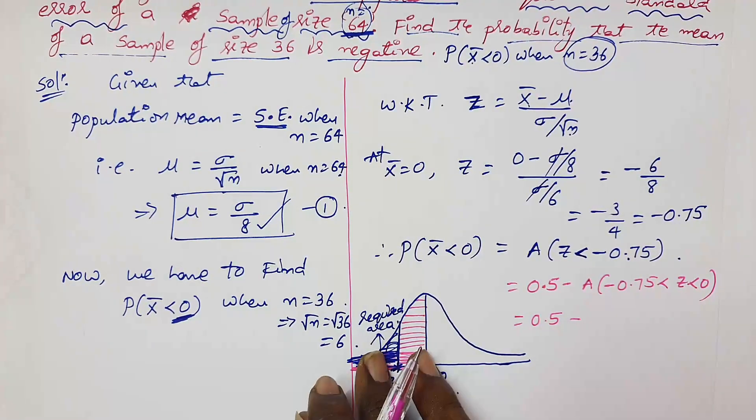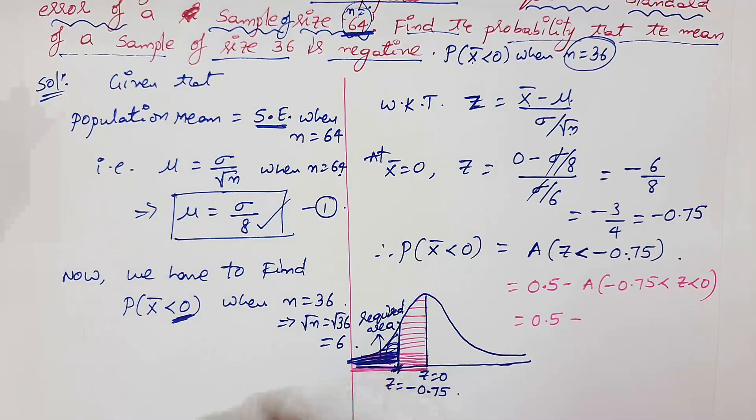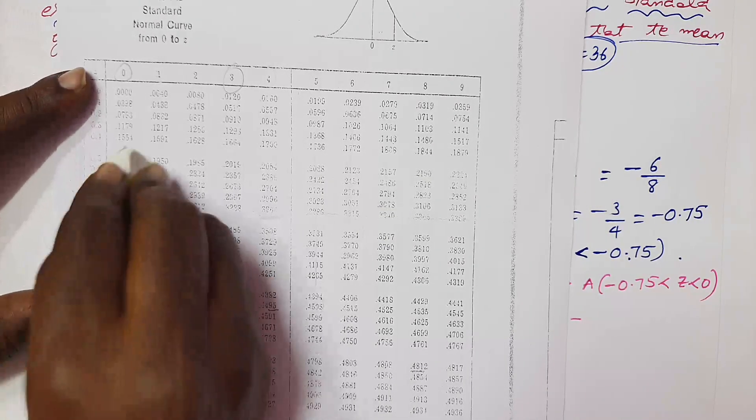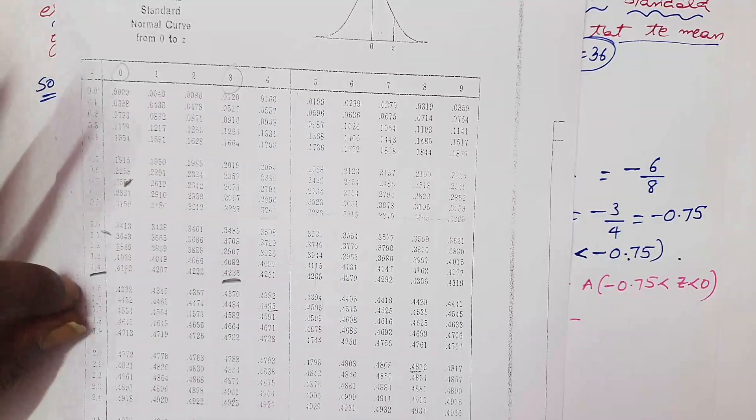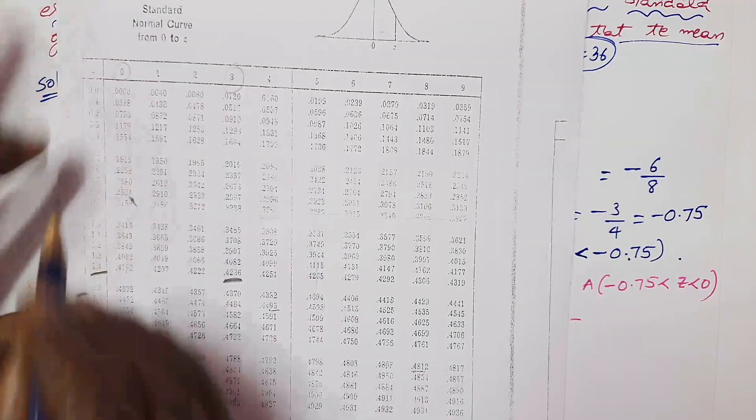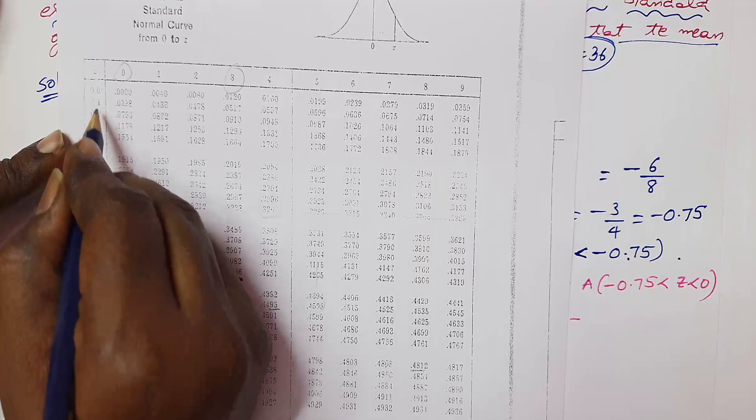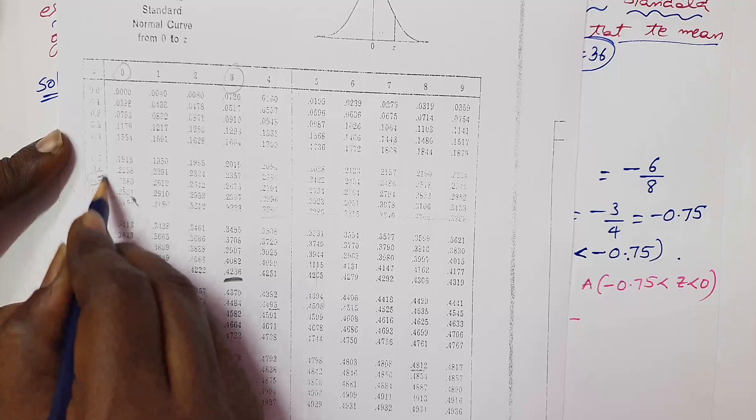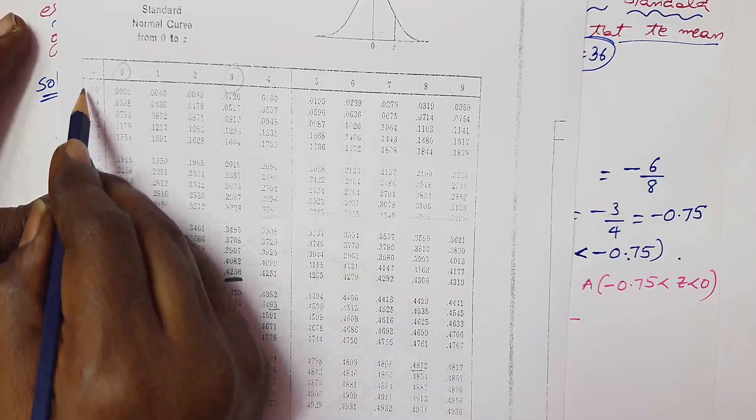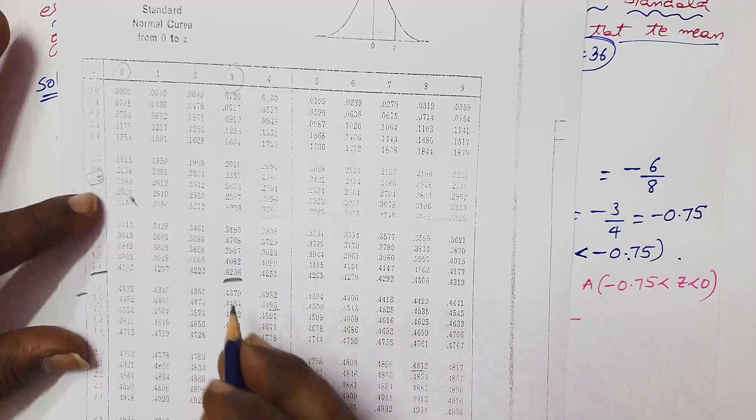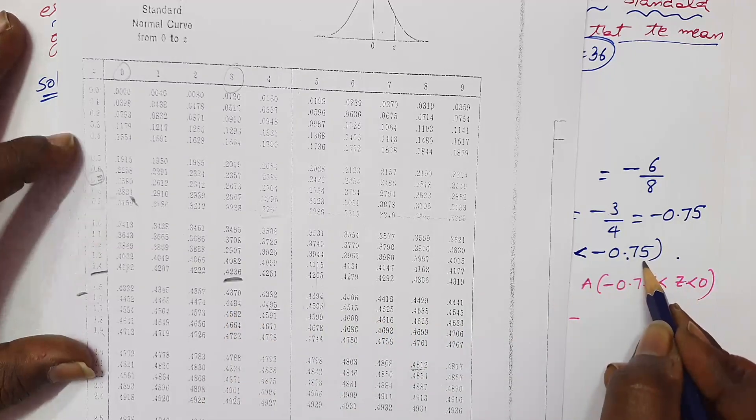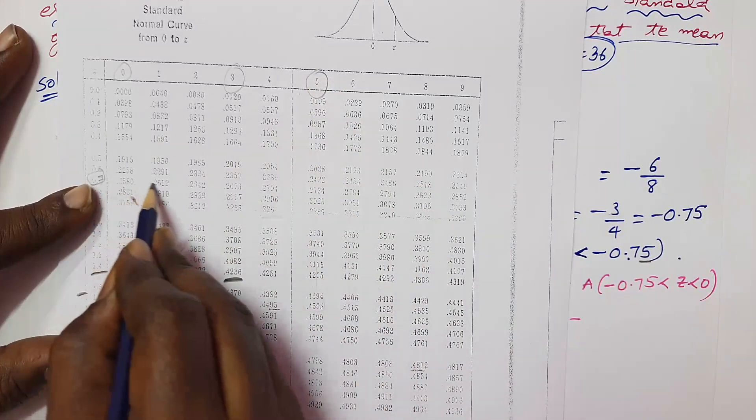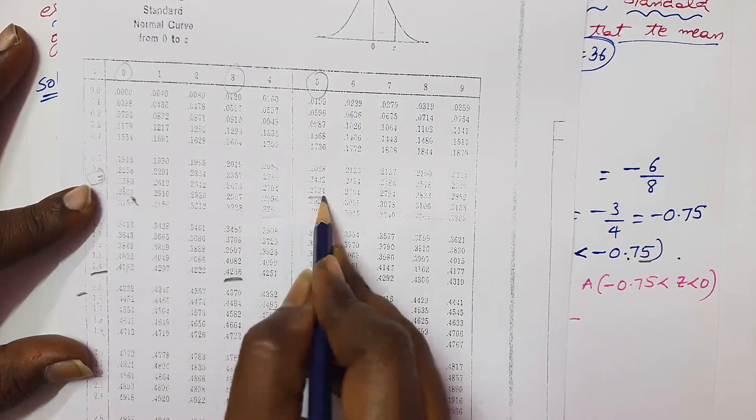So 0.5 minus area from 0 to 0.75. You can move row-wise 0.7 and 5. 5 is the second decimal place. It would be 0.2734.